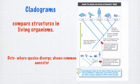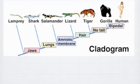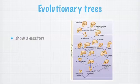We drew cladograms showing a line with organisms where every dot shows a common ancestor. A trait written on the line means every organism to the right of it has that trait — for example, jaws means everyone to the right has jaws, and the only one without a jaw is the lamprey. We also talked about evolutionary trees, where anything at the bottom is an old ancestor and anything at the top is alive today.